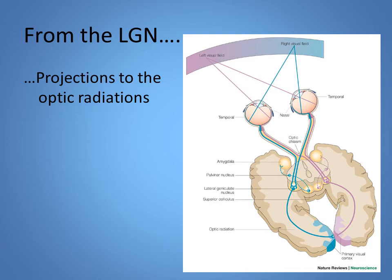From the lateral geniculate nucleus of the thalamus, there is a synapse and a projection to the cortex. These fibers are called the optic radiation, also called the geniculocalcarine tract, and they lead to the primary visual cortex on the medial side of the occipital lobe near the calcarine sulcus. It's also called the striate cortex because it looks stripey.